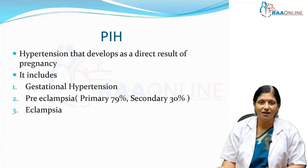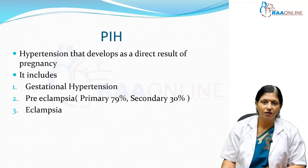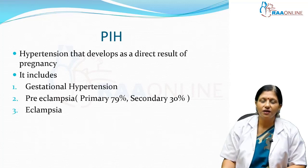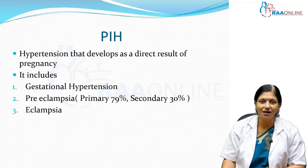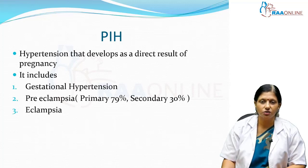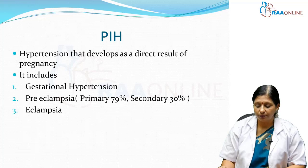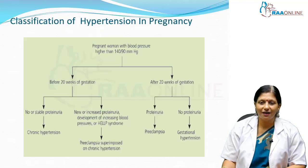The word eclampsia comes from a Greek word meaning lightning or convulsions. So in a patient with high blood pressure and proteinuria, if they throw a seizure, it is called eclampsia. A condition which predisposes to seizures is called pre-eclampsia. So how do we classify hypertension in pregnancy?